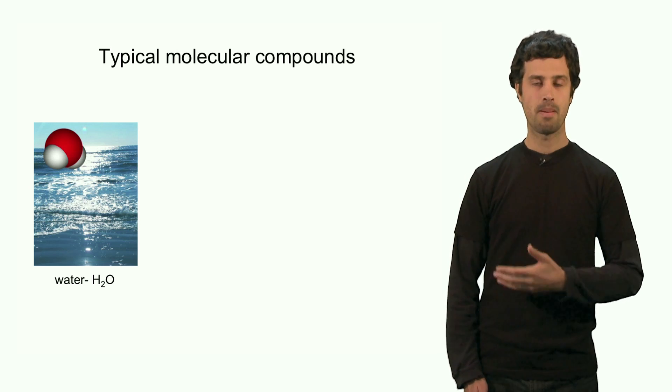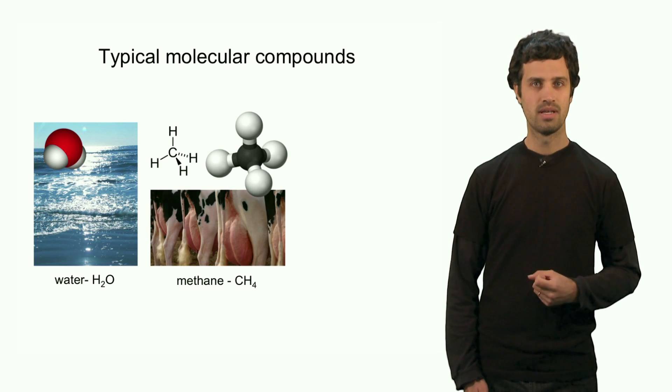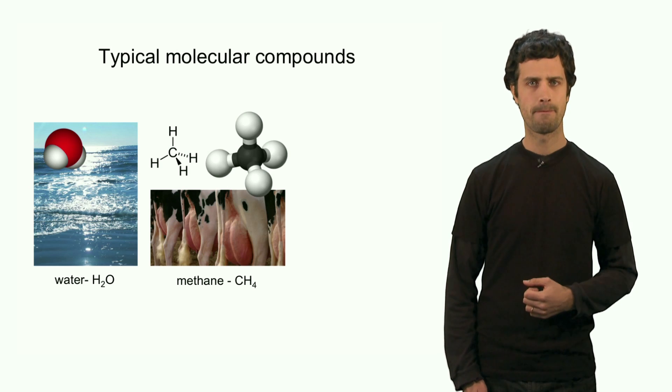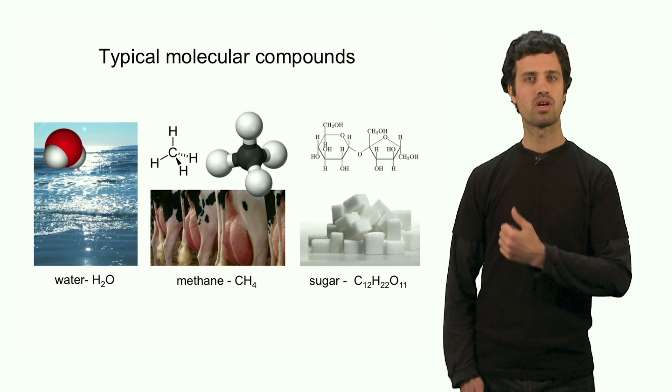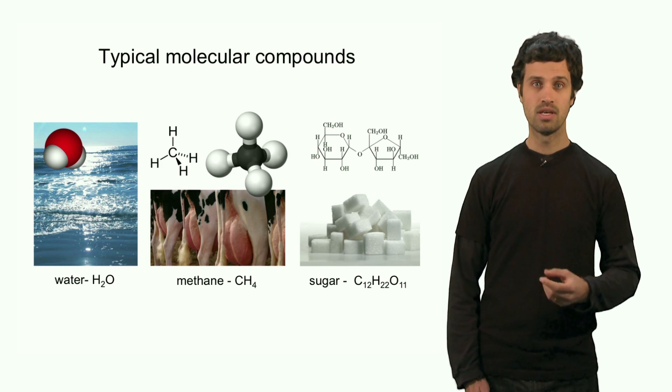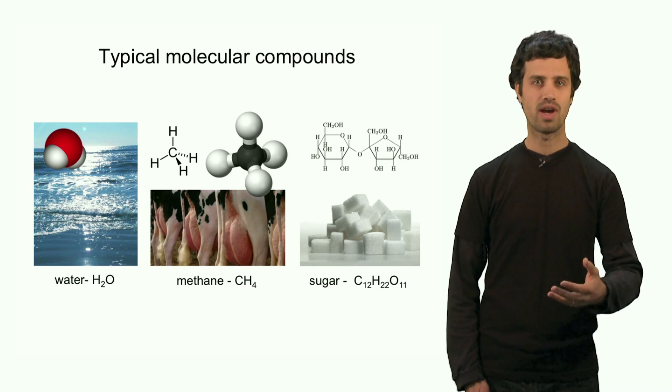Another example is methane. Methane is composed of a carbon atom that is linked covalently to four hydrogen atoms. Sugar is another example. Now, sugar is a more complicated molecule. Yet, the carbons, hydrogens and oxygens are linked through covalent linkages.